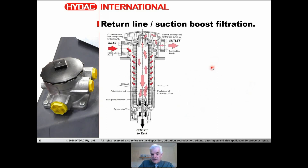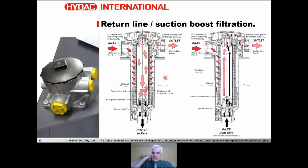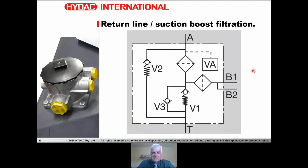Here are cutaways showing how this filter works. The inlet feeds through typical HYDAC filtration — outside to inside — and clean oil is directed back to tank through the back pressure valve. That filtered oil is also available at an outlet to feed the suction line of the charge pump. If more oil is needed than the open loop return line provides, the filter can draw additional oil through the outlet back through the filter into the charge head. V1 is the back pressure valve, V2 is the bypass valve, and V3 is the anti-cavitation valve.